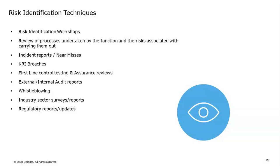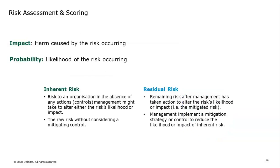Any breaches related to key risk indicators, findings or recommendations from testing and assurance, external audits, internal audit reports, industry sector surveys, or regulatory reports and updates should also be considered. From a risk assessment perspective, best practice is to look at risks from two dimensions: impact and probability. We recommend that organizations look at risk from an inherent risk perspective — the risk in the absence of any controls — and then also from a residual risk perspective, which takes into consideration the controls actually in place and identifies what remaining risk exists.